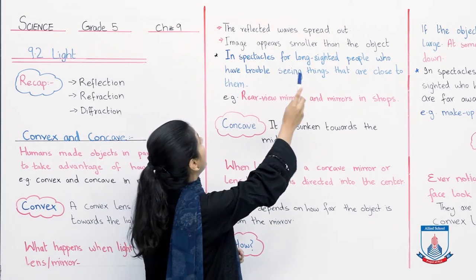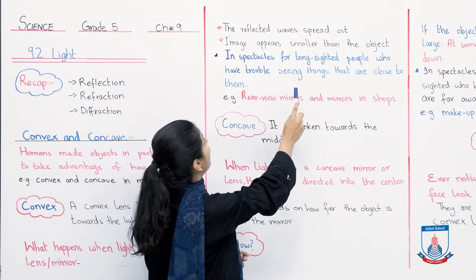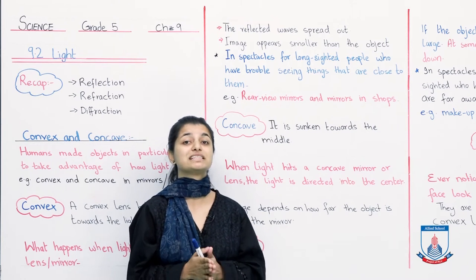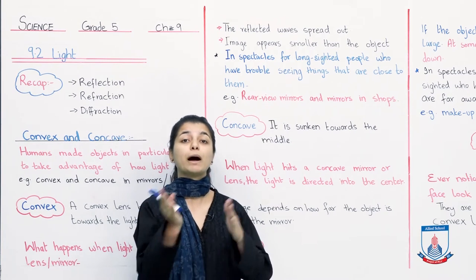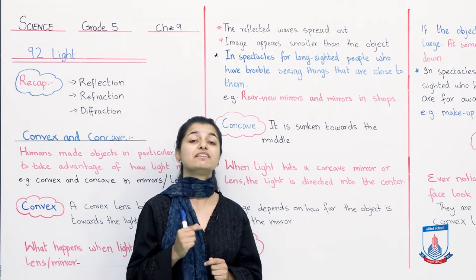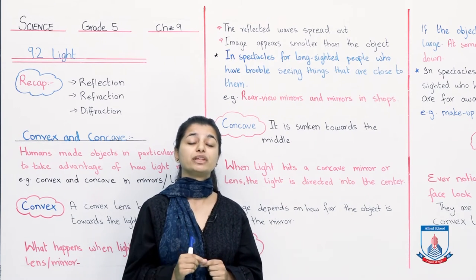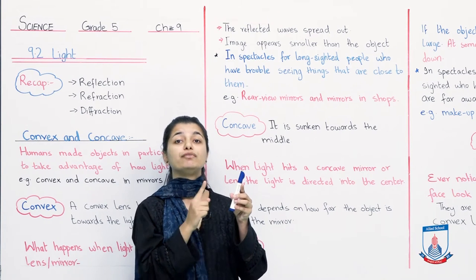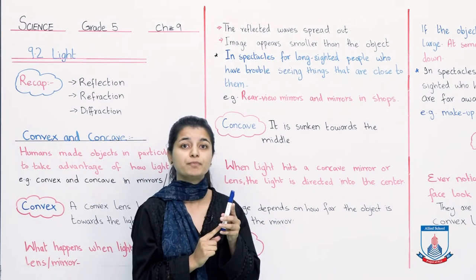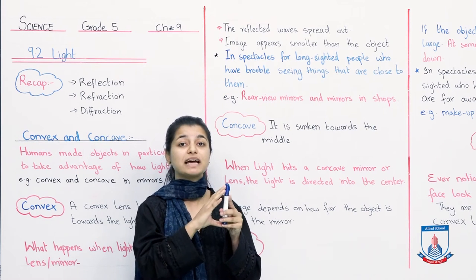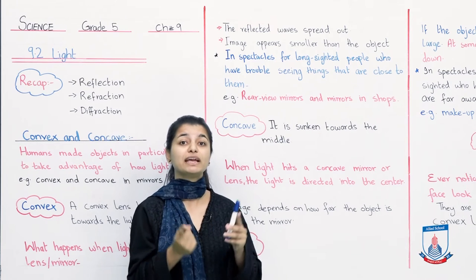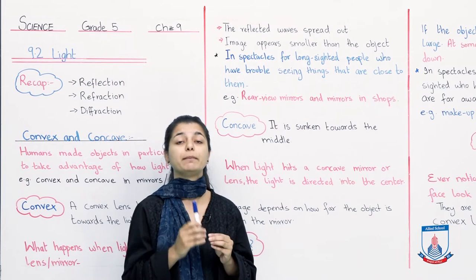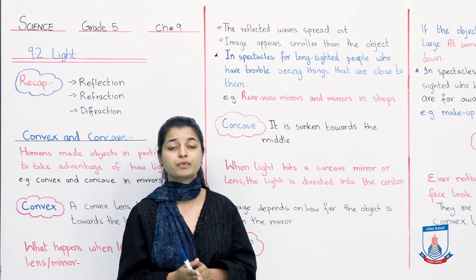The reflected waves spread out, and the image appears smaller than the object. The rays of light that reflect off the convex lens spread out. And because of that, the image appears smaller than your actual object. So if this is my red marker and I am trying to reflect it with a convex lens, its image will appear much smaller than the original size. And that's because light reflects from it and spreads out.